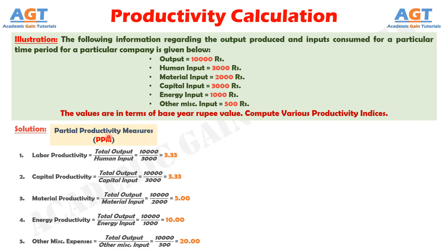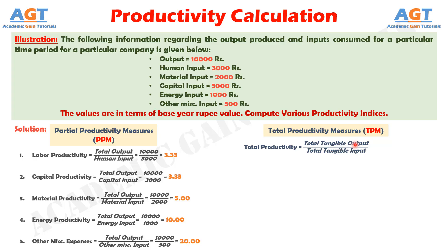Now let's calculate the total productivity. The formula of total productivity is total output divided by total input. Here the total input is the summation of human, material, capital, energy, and other miscellaneous expenses as input. We will have a total input of 9,500 rupees, and when we divide the total output of 10,000 rupees by this total input, we get the total productivity of 1.053.